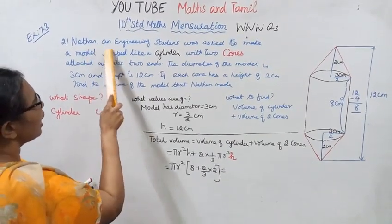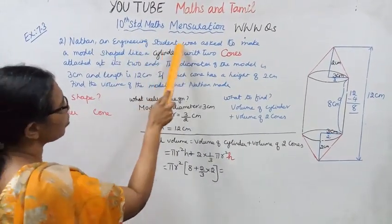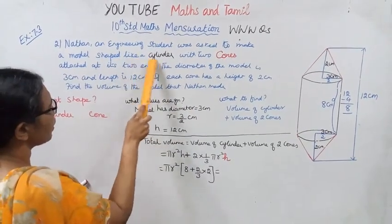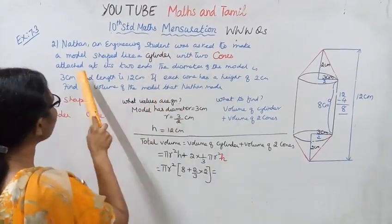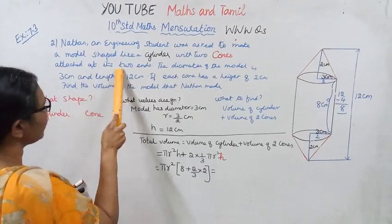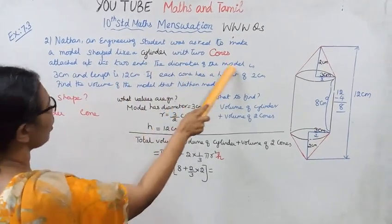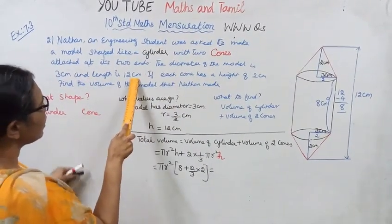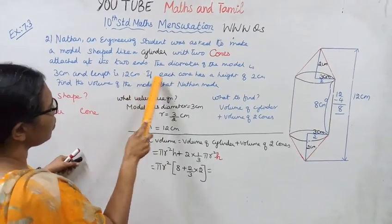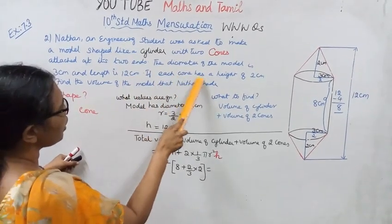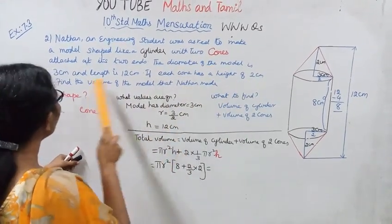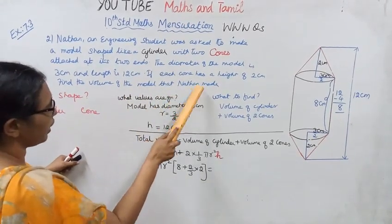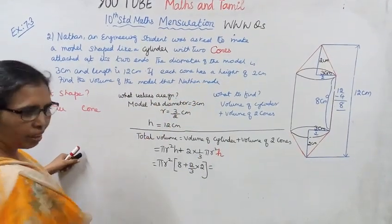Nadan, an engineering student was asked to make a model shaped like a cylinder with two cones attached as its two ends. The diameter of the model is 3 cm and the length is 12 cm. If each cone has a height of 2 cm, find the volume of the model that Nadan made.